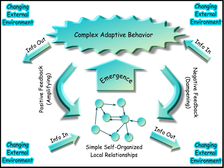In sociology, social complexity is a conceptual framework used in the analysis of society. Contemporary definitions of complexity in the sciences are found in relation to systems theory, in which a phenomenon under study has many parts and many possible arrangements of the relationships between those parts. What is complex and what is simple is relative and may change with time. Current usage of the term 'complexity' in the field of sociology typically refers specifically to theories of society as a complex adaptive system.